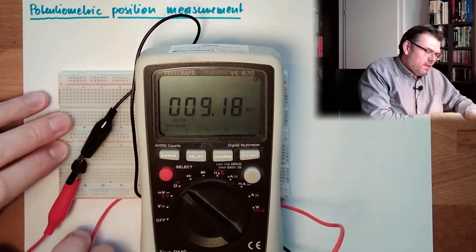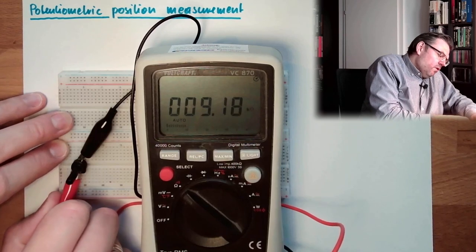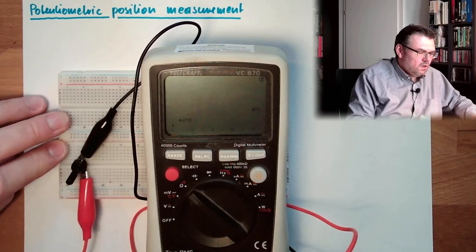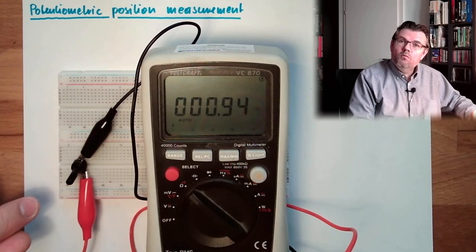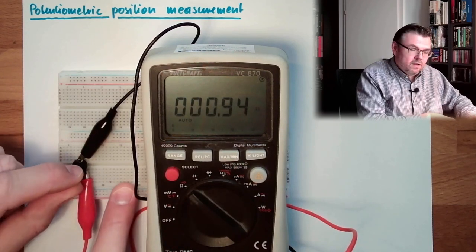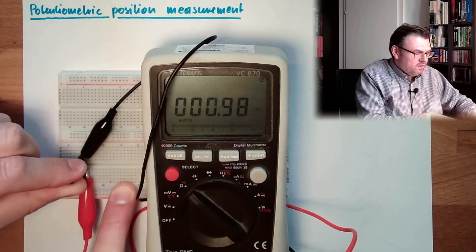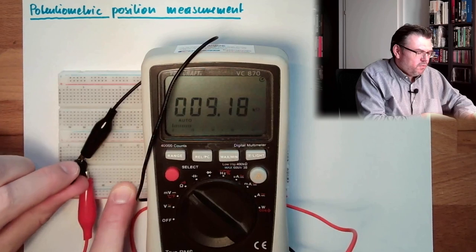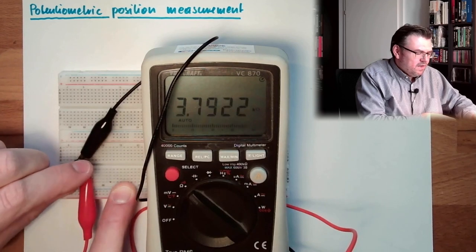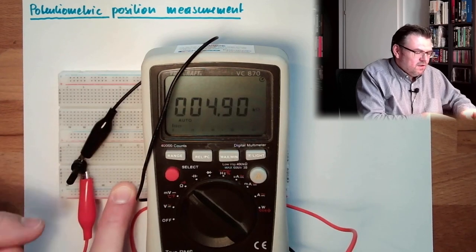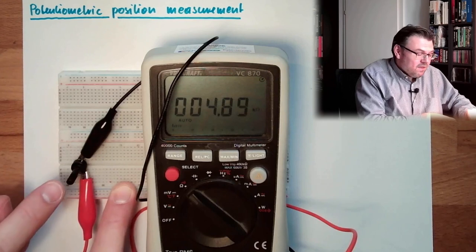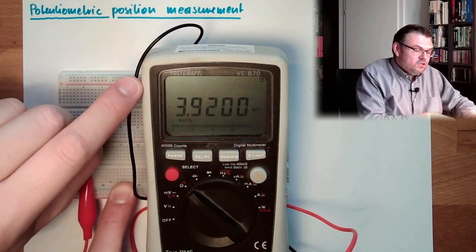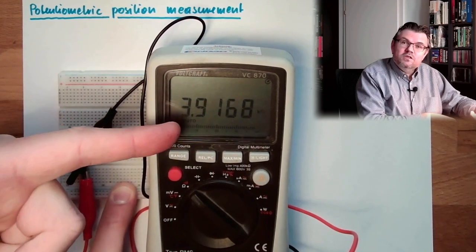And now, let's measure between those two. Aha. Now I have here 1 ohm. I am fully to the right. Now I turn fully to the left. Now I have here 10 kiloohms. So what I can do is I can adjust depending on my turning here. It is changing a property, it is changing the resistance.